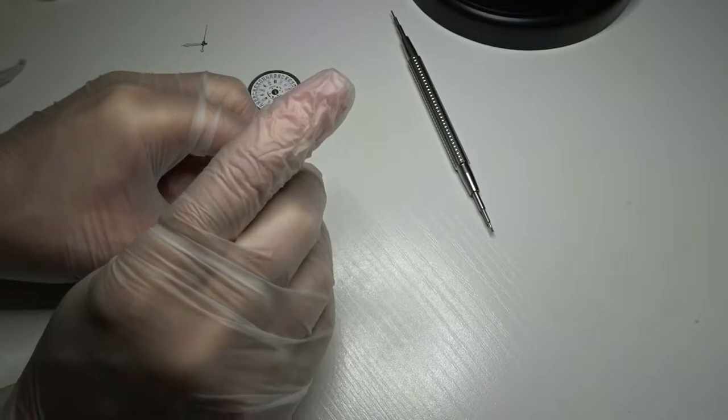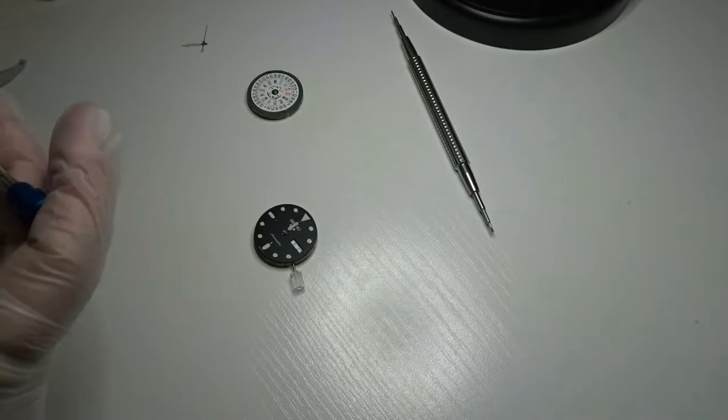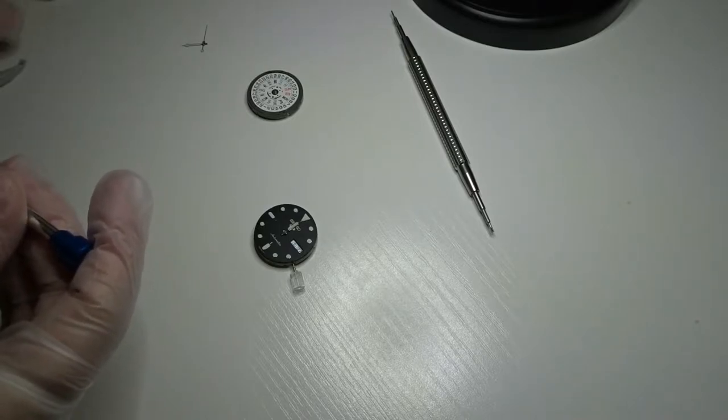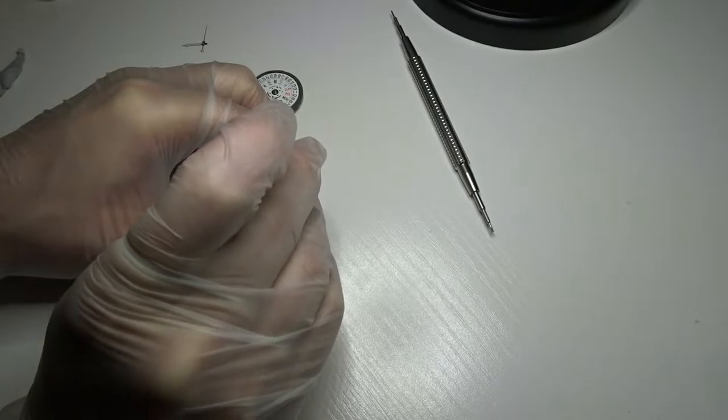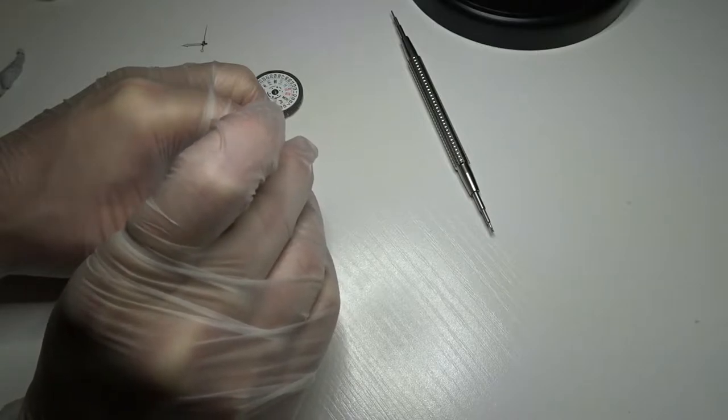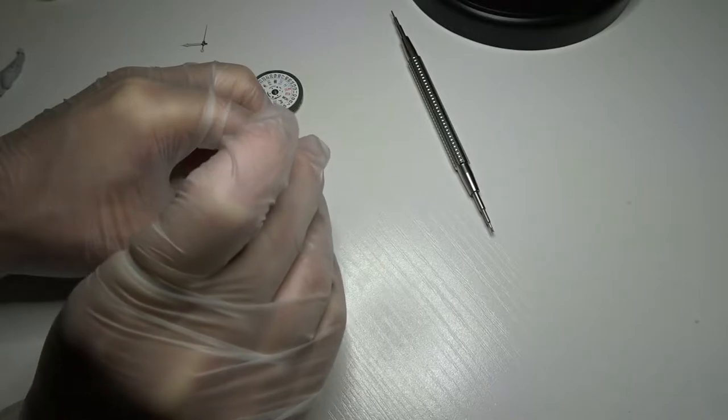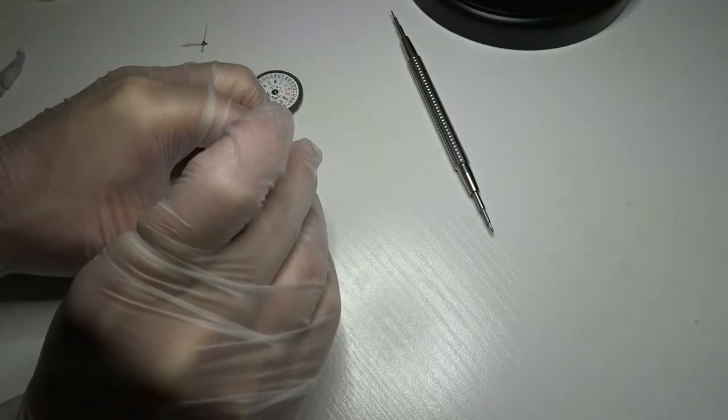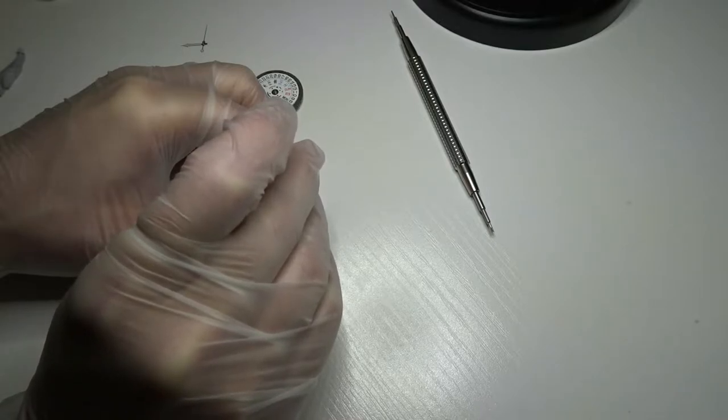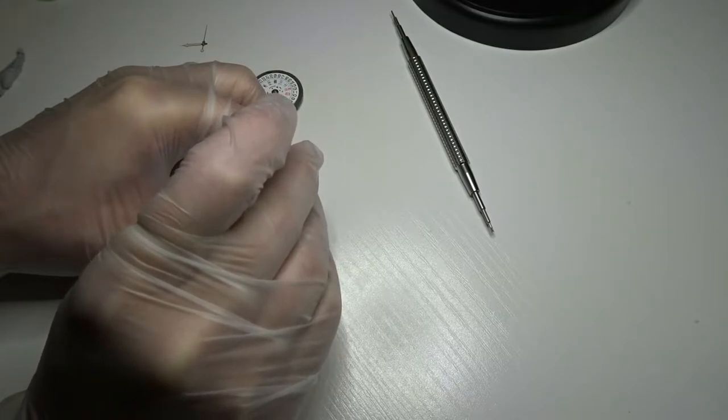Once you're satisfied with the alignment, I just press down firmly with the tool and that's going to seat the hour hand onto the post. Once that's on and you're satisfied with that, just do the same thing for the minutes hand. It's got to also line up at 12.